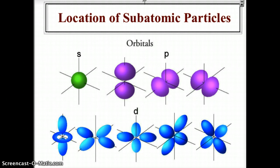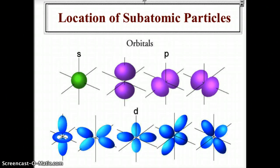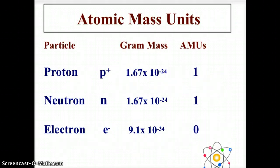Electrons don't actually travel in fixed orbits like the moon around the Earth. Instead, they exist in orbital clouds, flying randomly through those regions. The s orbital is a simple sphere. The p orbitals work along all three axes — an x-axis pair, a y-axis pair, and a z-axis pair. The d orbitals are highly complex. As the atom gets larger, the orbital cloud arrangement changes.